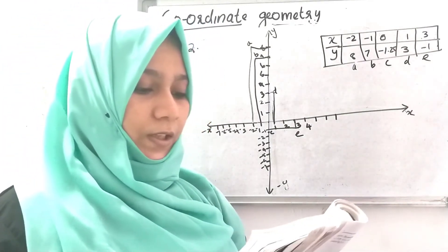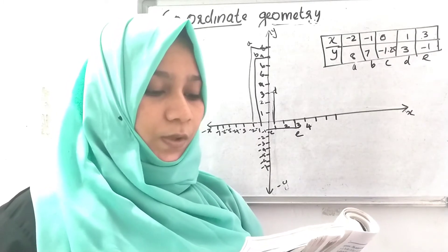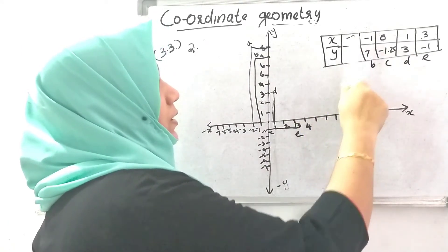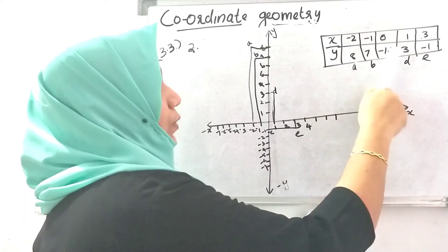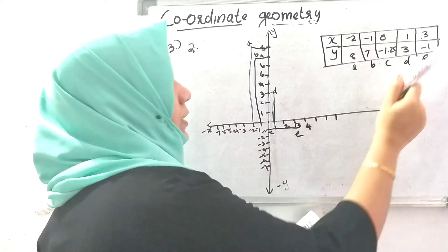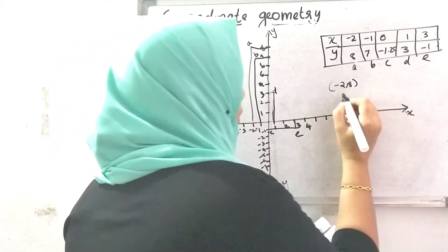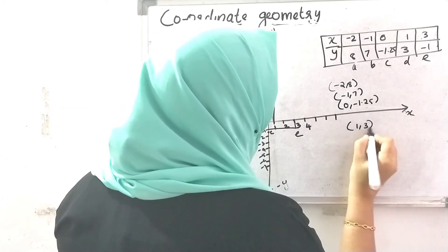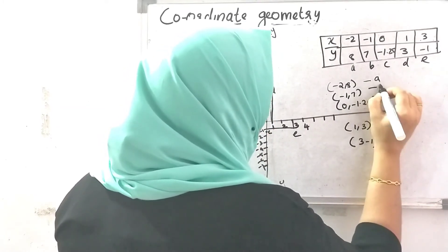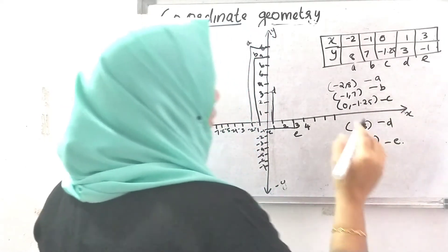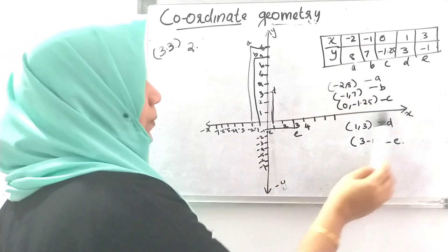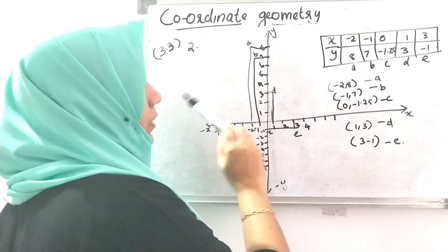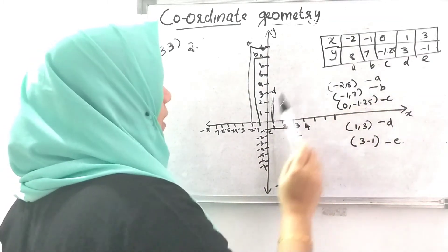Plot the points (x, y) given in the following table on the plane, choosing suitable units of distance on the axes. x is minus 2 and y is 8; x is minus 1 and y is 7; x is 0 and y is minus 1.25; x is 1 and y is 3. Point A at x equals minus 2, y equals 8.